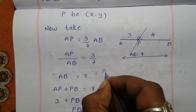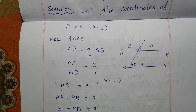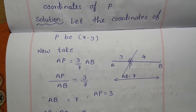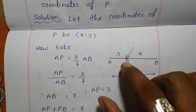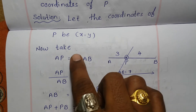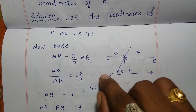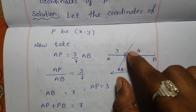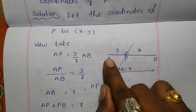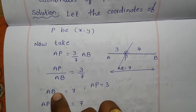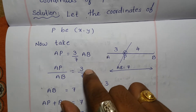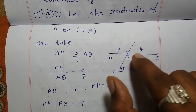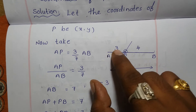AB is 7 units in total and AP is 3 units, so the remaining distance from P to B is 7 minus 3, which is 4 units. Therefore, P divides the line segment AB in the ratio 3:4.